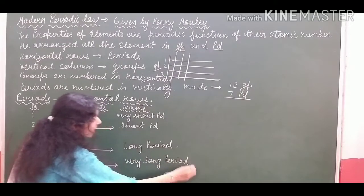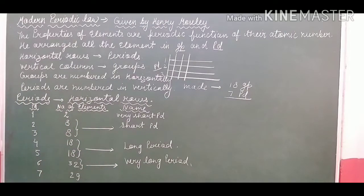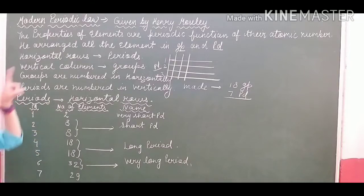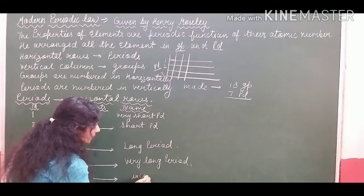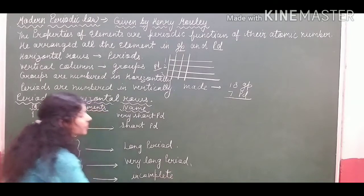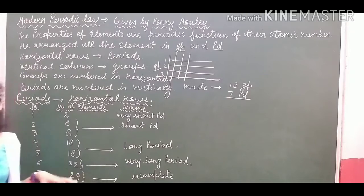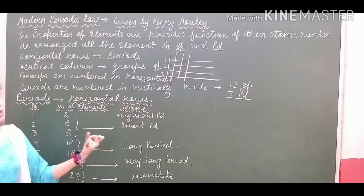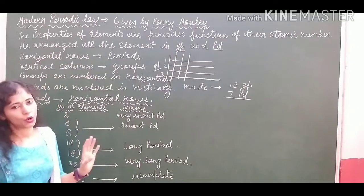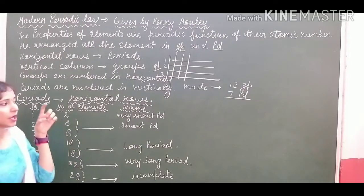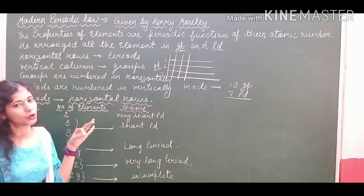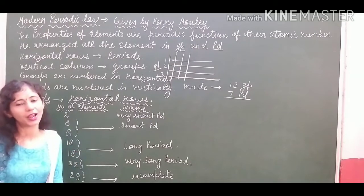And the last one — the seventh period. In the periodic table there are 118 elements now, but when this concept was given, this period was having only 29 elements and was not completed. So we say that the seventh period is an incomplete period. In theoretical concept, the sixth period was completed but the seventh period was incomplete. This was the detailed study of periods given by Henry Moseley. In the next session, we will study about the groups in detail. That's all for today's session — goodbye and have a nice day.